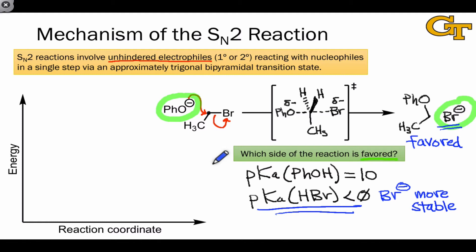Notice that our criterion for good leaving groups, that their conjugate acids have pKa's less than zero, guarantees that any nucleophile whose conjugate acid has a pKa greater than zero is going to react favorably with molecules containing good leaving groups.